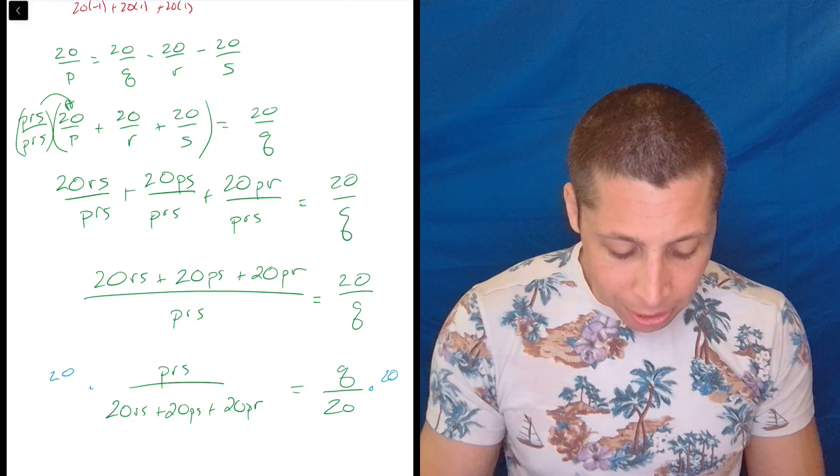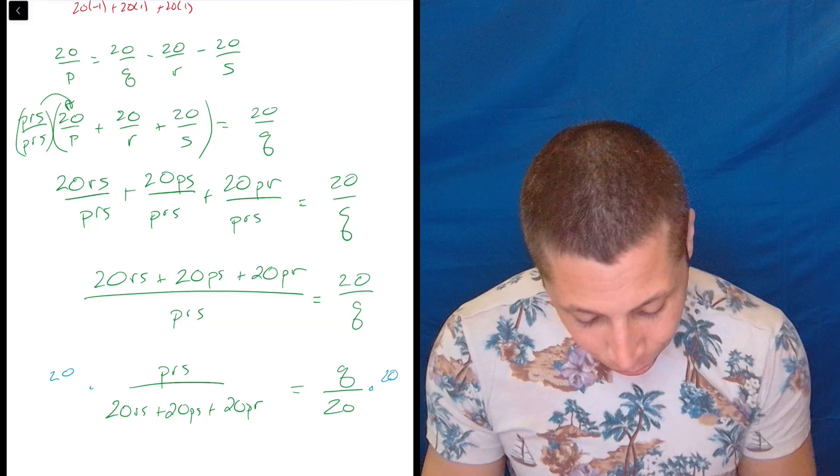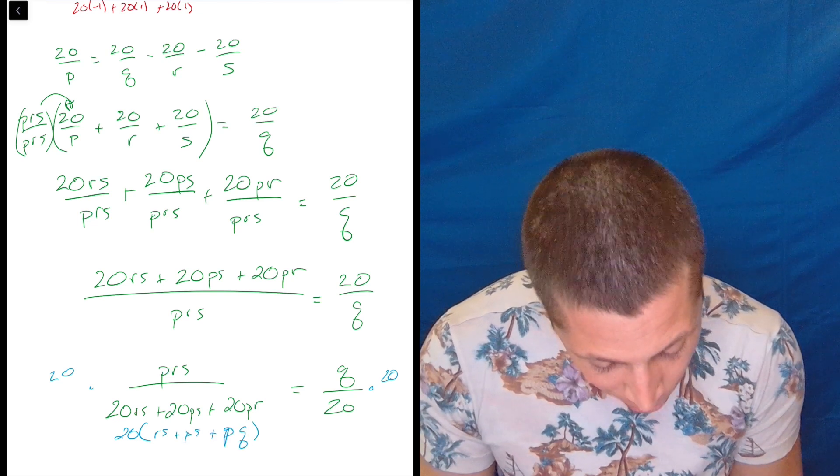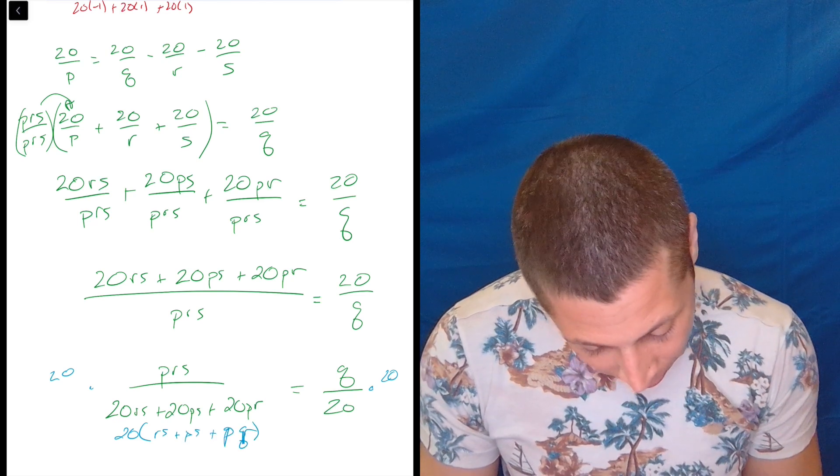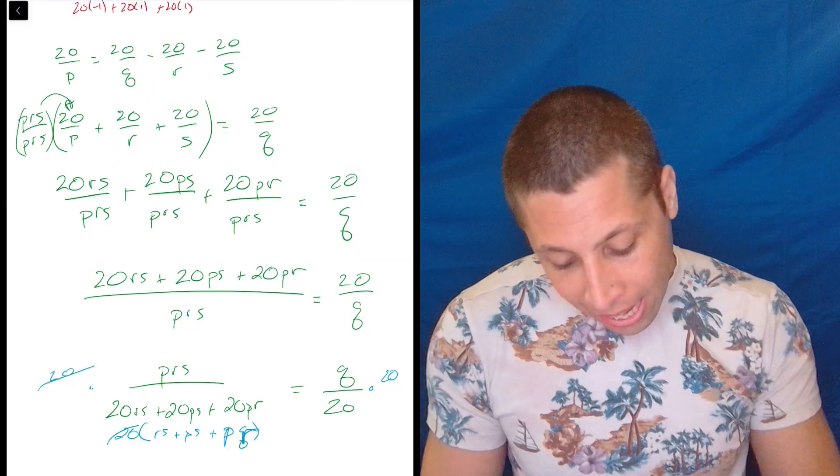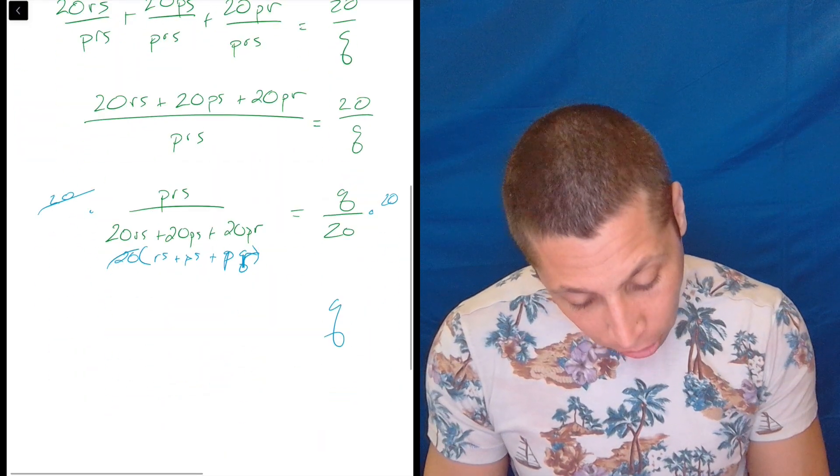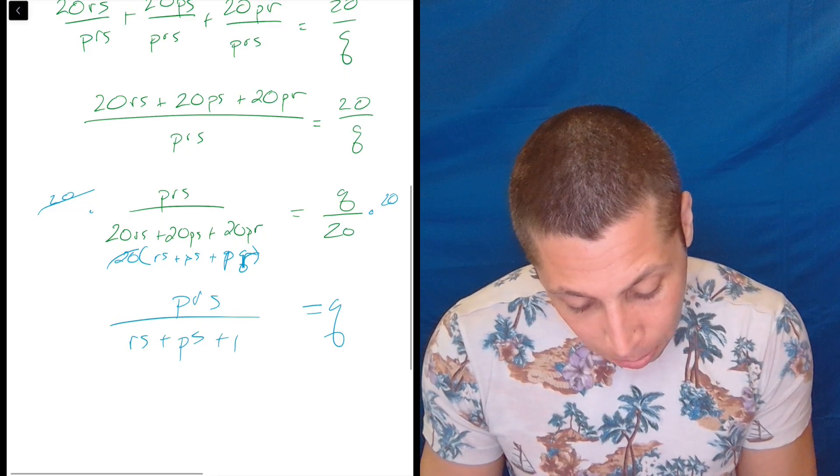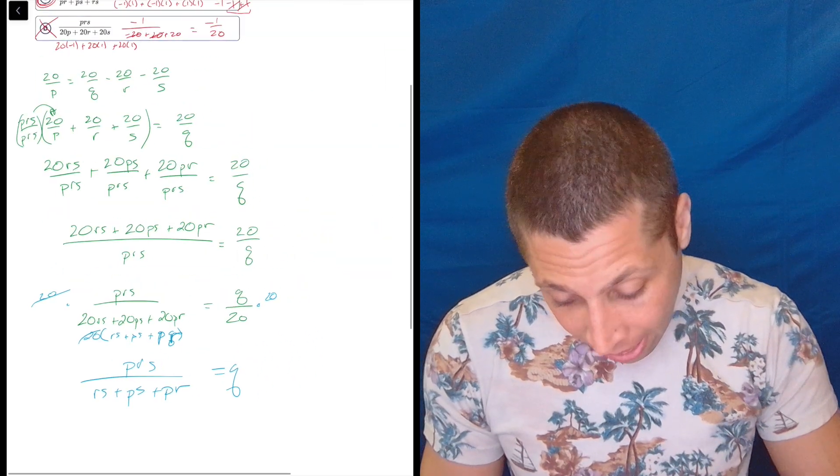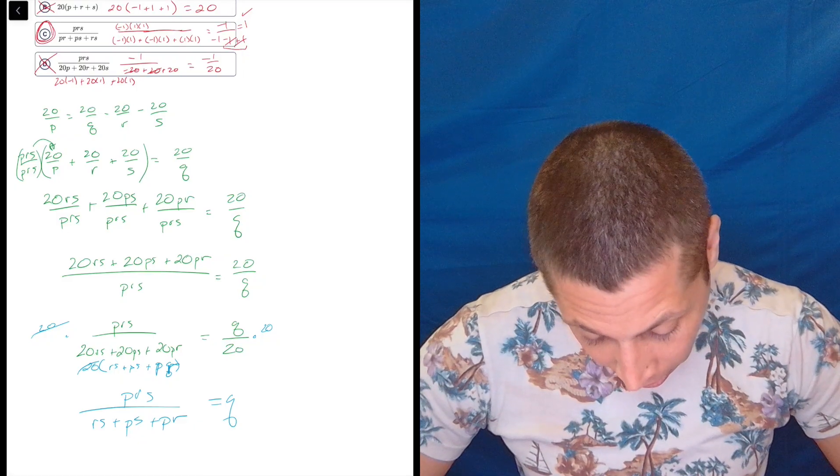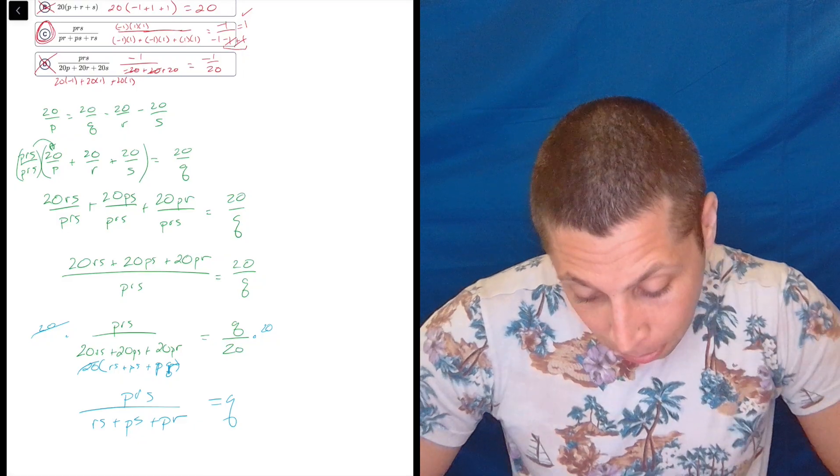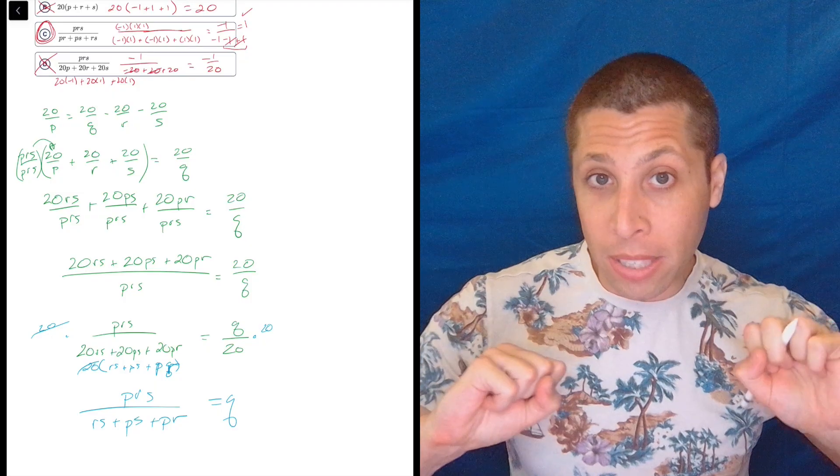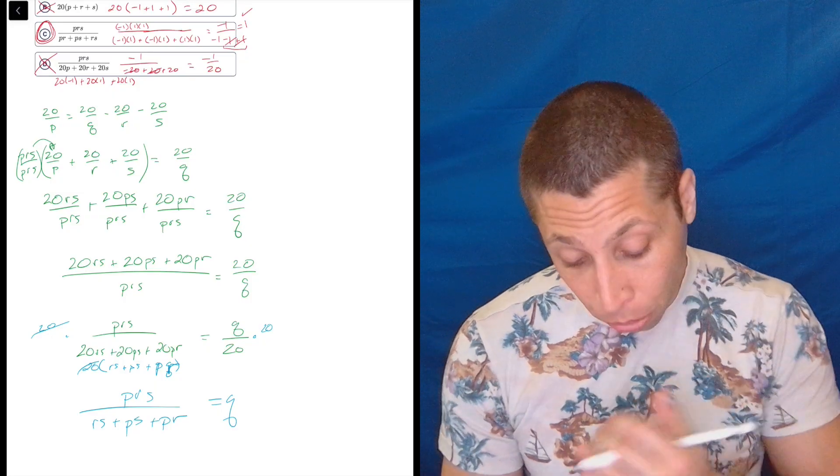And now how do I get that 20 out of there to get Q alone? I multiply by 20. And if I think about the bottom here, I could kind of pull that 20 out. So that's 20 times RS plus PS plus PR. The 20 cancels. So now we end up with Q is equal to PRS over RS plus PS plus PR. Is that even what we ended up with? PRS over PR plus PS plus RS. So it's a little out of order from what they had, but you should be okay with the properties of addition that you're okay with moving those things on the bottom around. But that's it. That's the proof.